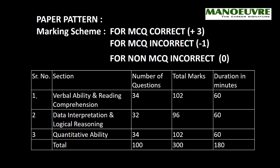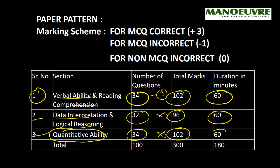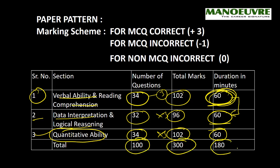In CAT you have three sections. The first section is Verbal Ability and Reading Comprehension — 34 questions, each question carries 3 marks, so 102 marks for this section, which you have to finish in 60 minutes. The second section is Data Interpretation and Logical Reasoning — 32 questions, 96 marks, to be finished in 60 minutes. The third section is Quantitative Aptitude — 34 questions, 102 marks, 60 minutes. There is a restriction that you cannot switch from one section to another until your 60 minutes gets over. Overall: 100 questions, 300 marks, to be finished in 180 minutes.